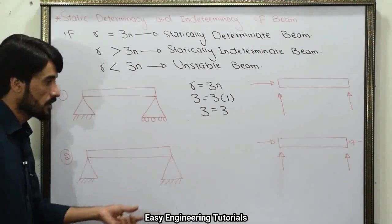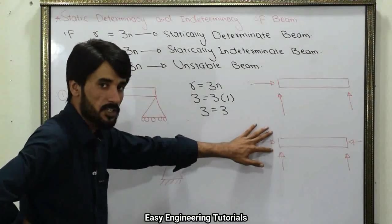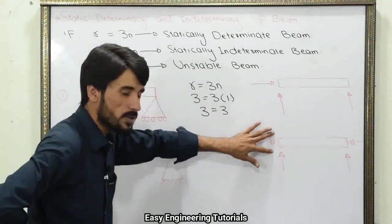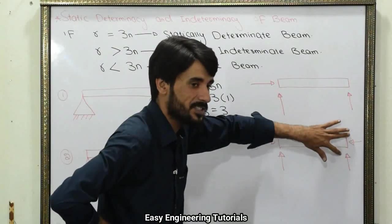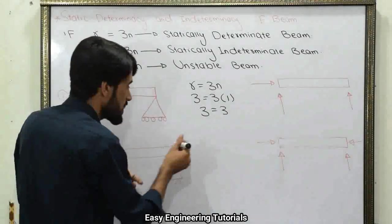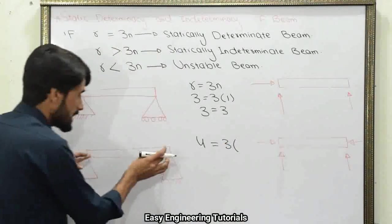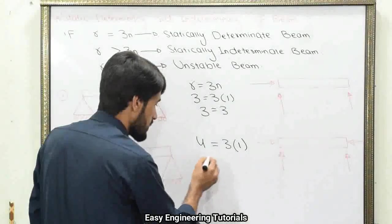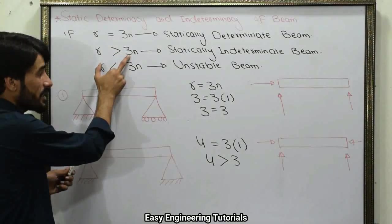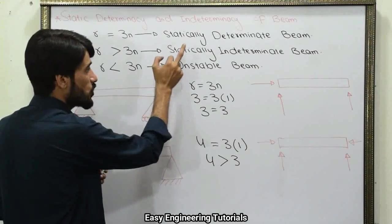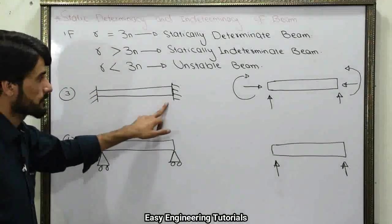Example 2: If both sides of the beam are hinged. Hinge support provides two unknown reaction forces, so two unknowns at each end gives R = 4. N = 1, so 3N = 3. Since 4 > 3, R is greater than 3N, and therefore this beam is a statically indeterminate beam.